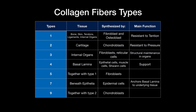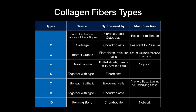Type 9 collagen is always found together with type 2. So key pairings to remember: types 1 and 5 are always together, types 2 and 9 are always together, and types 4 and 7 are always together. Type 10 collagen supports bones, forming a network inside bone tissue; it is synthesized by chondrocytes.